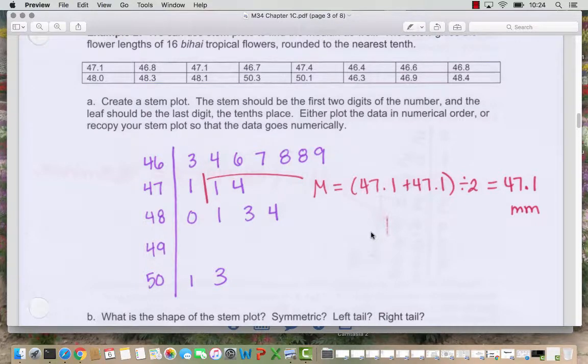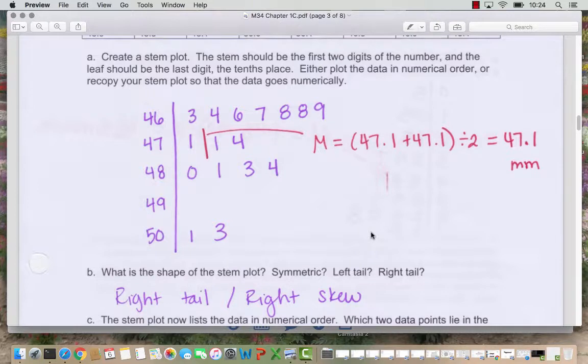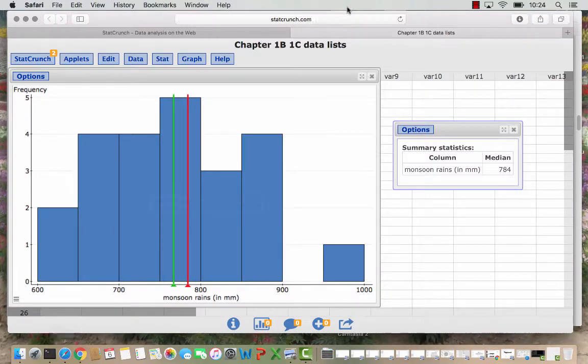How would we describe the shape? You might rotate your head and say it looks like this has a right tail or a right skew. Imagine drawing it as a histogram and rotating it this way. If you wanted to make the stem plot in StatCrunch let me remind you how we could do that.